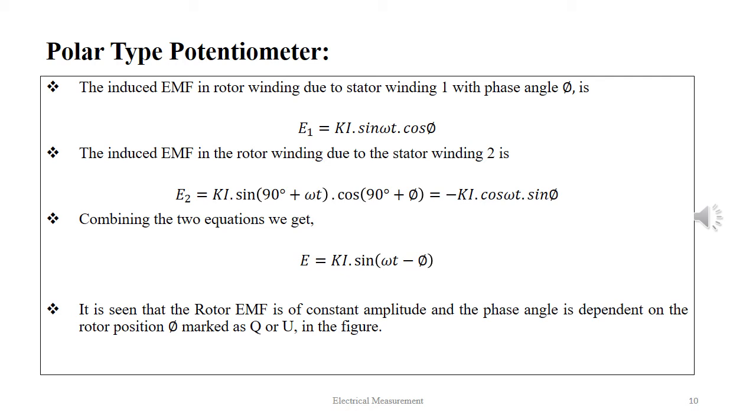The induced EMF in rotor winding due to the stator winding 2 is given as E₂ = KI·sin(90° + ωt)·cos(90° + φ), which translates to -KI·cosωt·sinφ. Combining the two equations, we get E = KI·sin(ωt - φ).